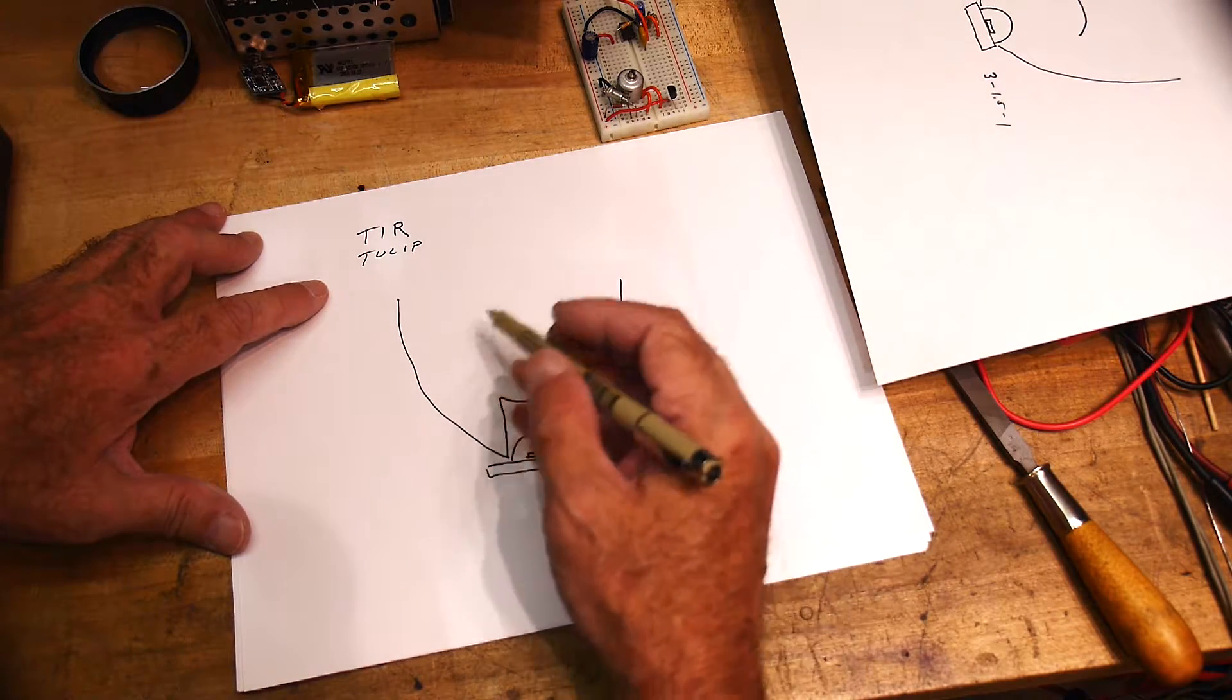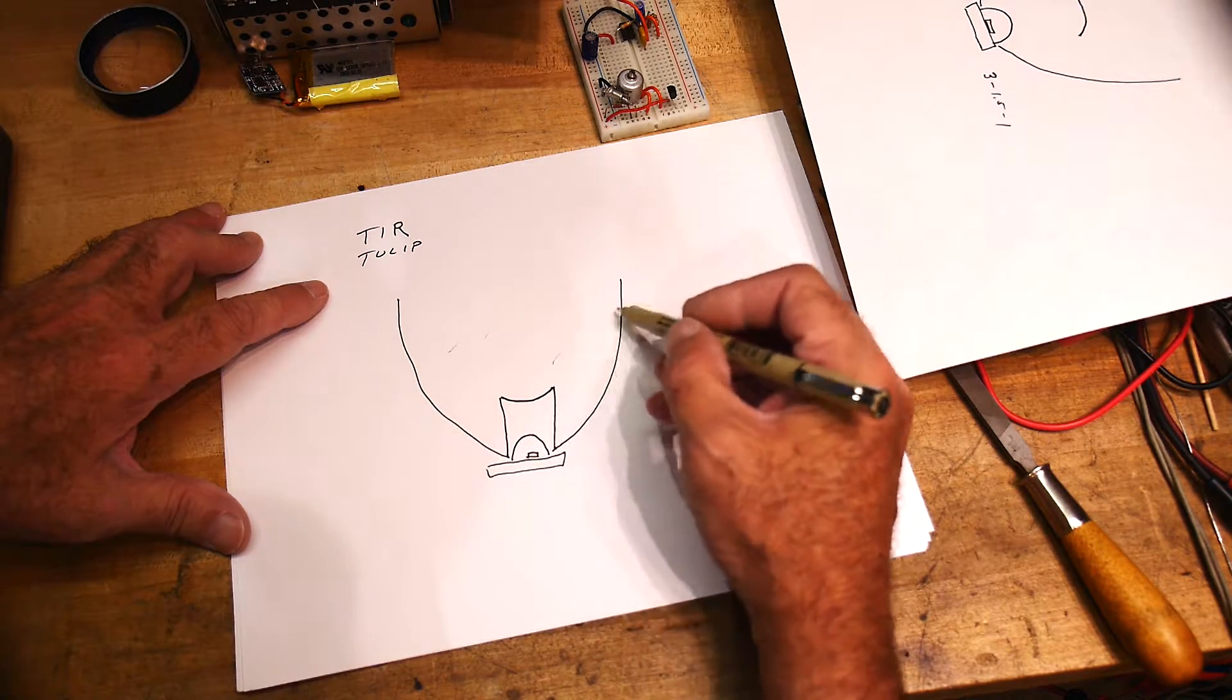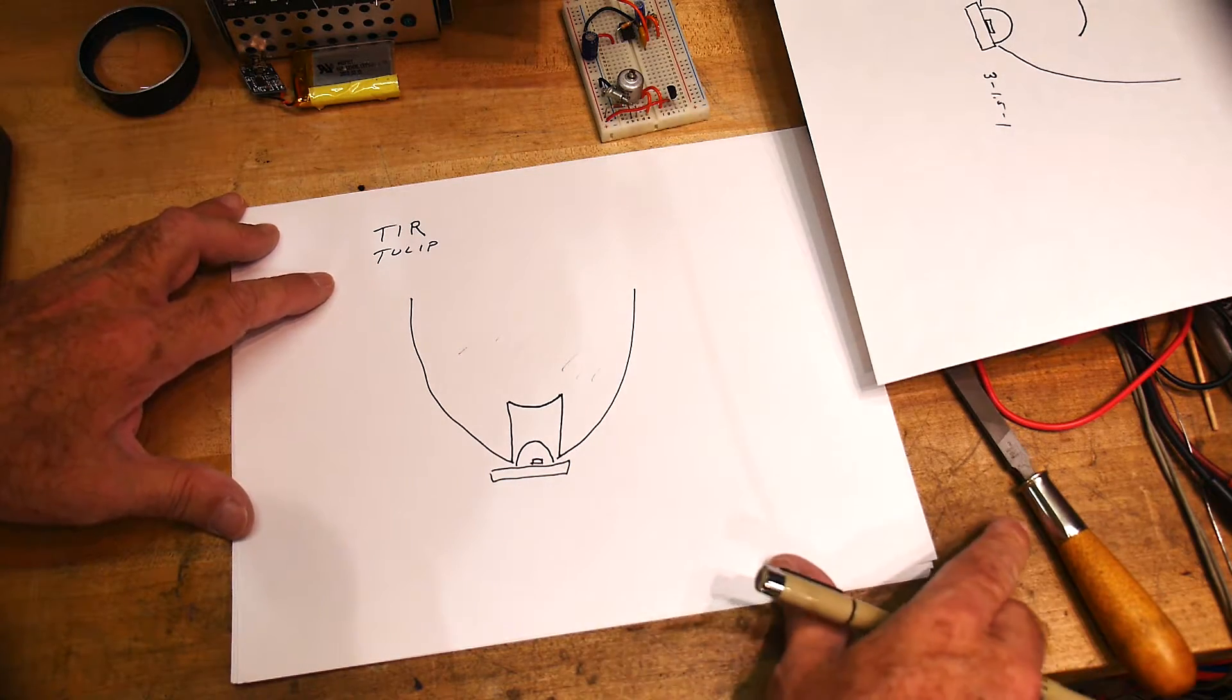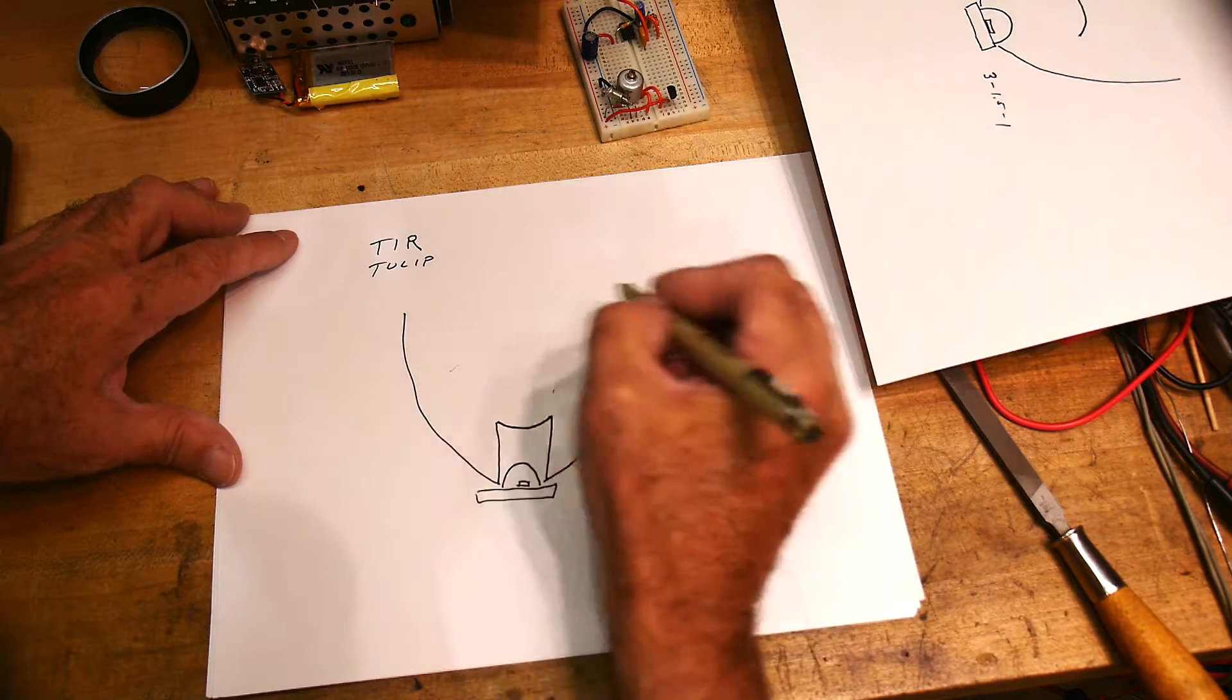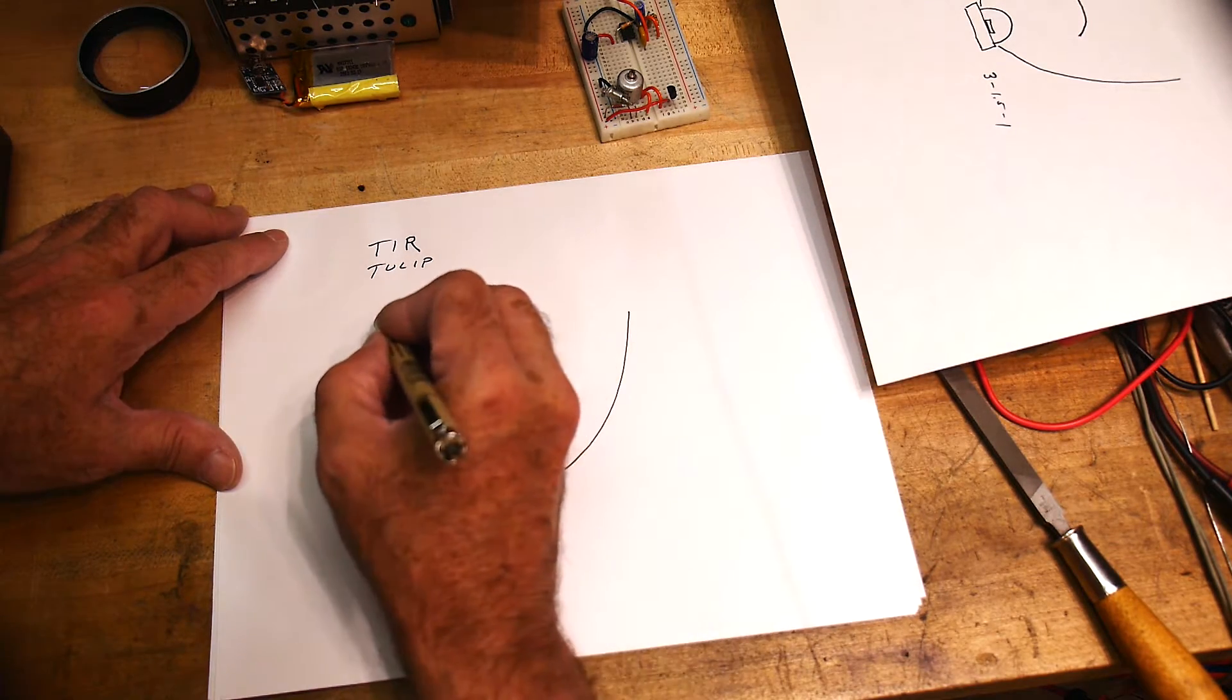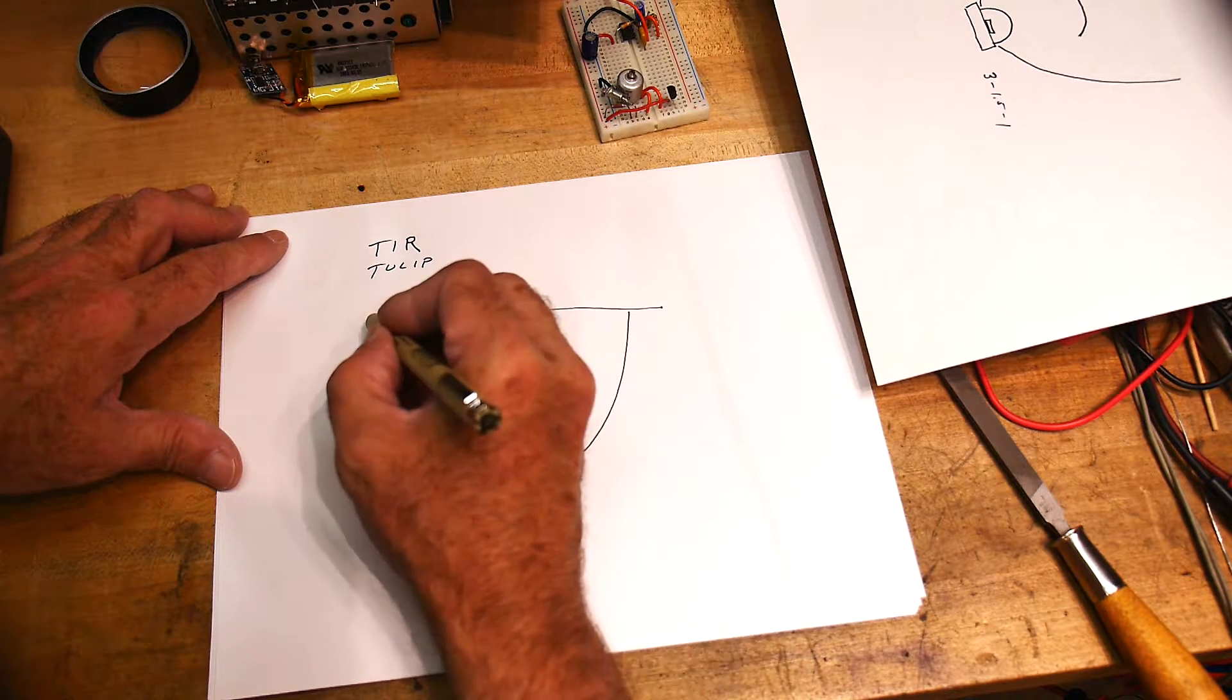I'm going to mold this thing out of one piece of plastic. So it kind of looks like a tulip. And the top can be different shapes, but just for today we're gonna say it looks like this.